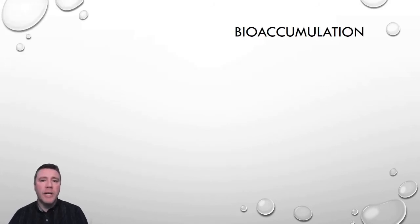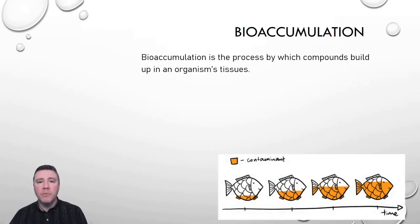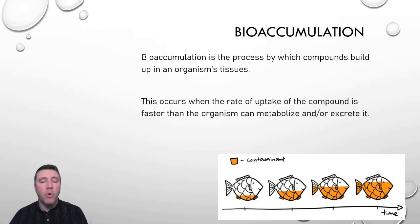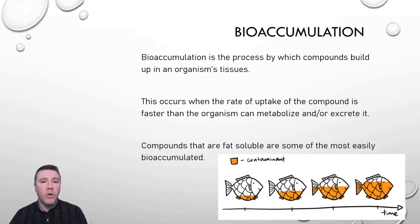A set of concepts related to pollutants is how they travel through food webs and become incorporated into an organism's mass. The first concept is bioaccumulation. Bioaccumulation is when compounds build up within a particular organism or trophic level. This occurs because the rate at which those organisms take in the compound is faster than the rate that they can be metabolized or excreted. Compounds that are fat-soluble are more easily accumulated than those that are water-soluble, and those fat-soluble compounds tend to accumulate in an organism's fatty tissues.